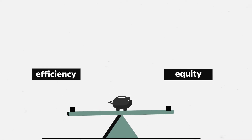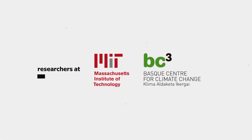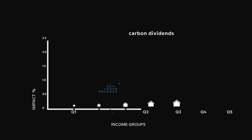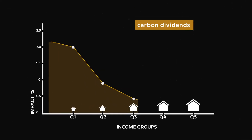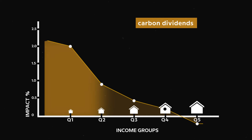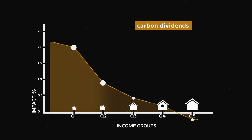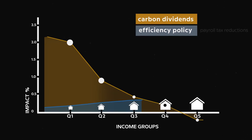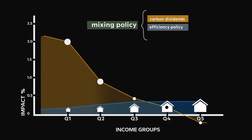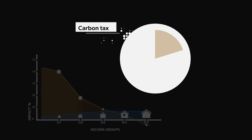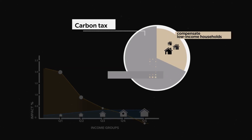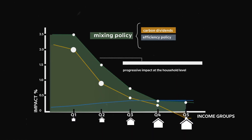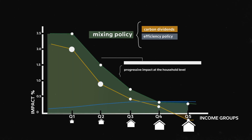Searching for the answer, researchers at MIT and BC3 have assessed the socioeconomic impacts of different uses of carbon revenues. Their results show that carbon dividends have progressive impacts on households, with the greatest benefits going to the lowest-income ones, while policies centered on improving economic efficiency — e.g. payroll tax reductions — have slightly regressive impacts. But what would happen if we combined both policies? With only part of the carbon tax revenue used to compensate low-income households, and the rest used to improve the economy by reducing payroll taxes, this option results in an optimal blend of sufficiently progressive impact at the household level and economic efficiency at the national level.